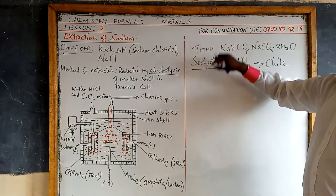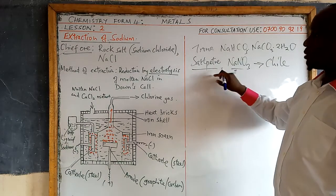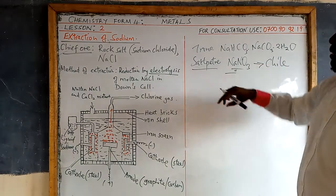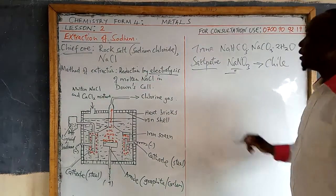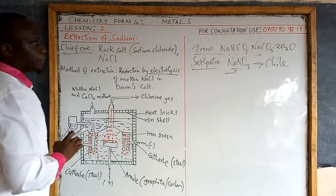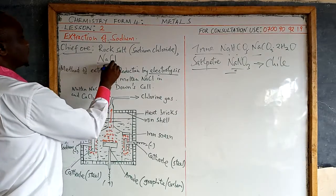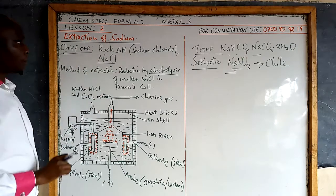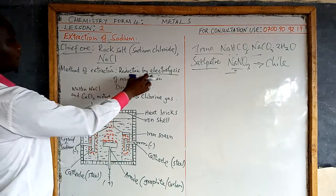So these are the other ores of sodium. In Chile, they extract sodium on a large scale using sodium nitrate because there are large deposits of sodium salt petre there. But in most countries, extraction is done from rock salt. In Kenya, we have large deposits of trona at Lake Magadi along the Rift Valley, which can also be used. But on a large scale, rock salt is what is used. That is why it is referred to as rock salt, and the chemical name is sodium chloride. The method of extraction, as I said, is by electrolysis.